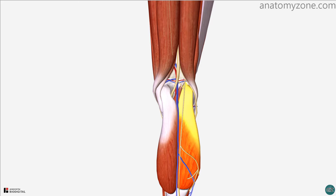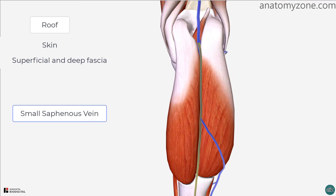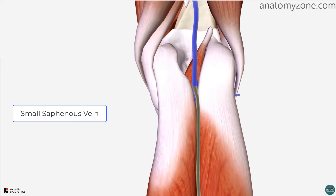In terms of the roof of the popliteal fossa, this is formed by skin, superficial fascia and deep fascia. The most important structure to remember with regard to the roof is the small saphenous vein. The small saphenous vein passes through the roof — it receives its blood supply from the dorsal venous arch of the foot and passes between the heads of the gastrocnemius muscles to drain into the popliteal vein.